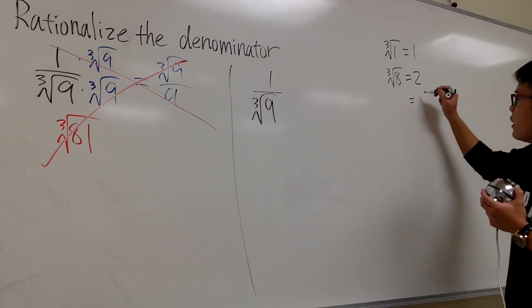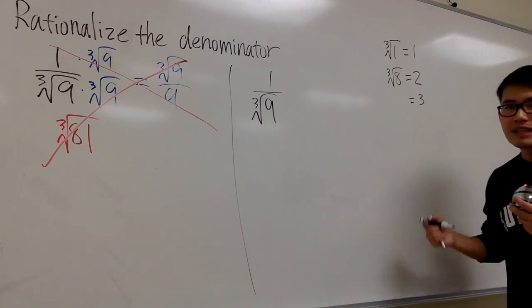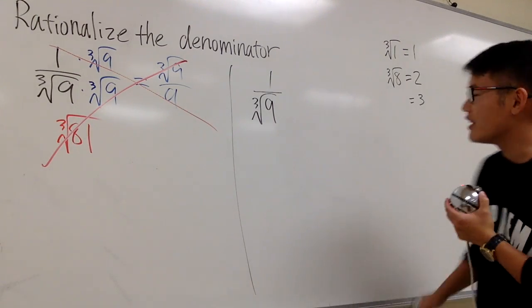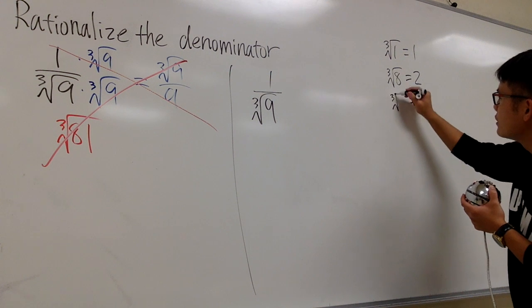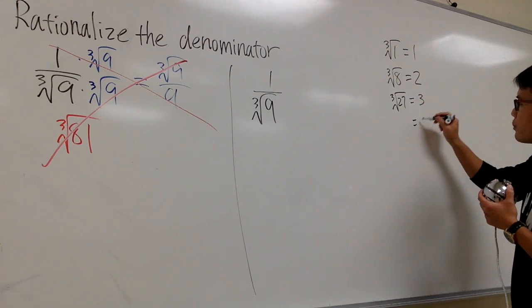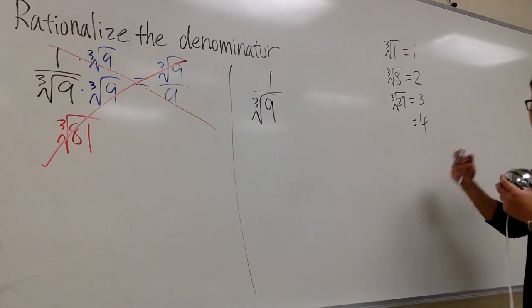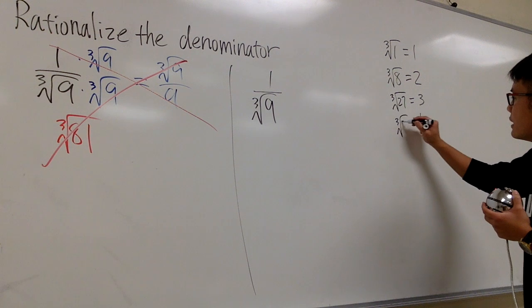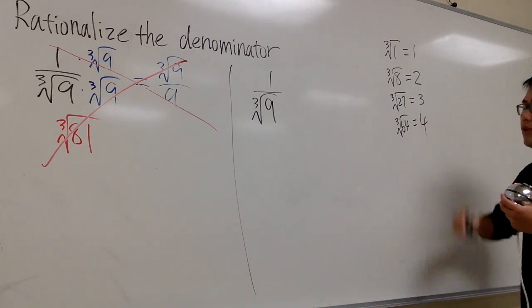The next one, I know I'm going to end up with 3. So I just have to do 3 times 3 times 3, and we know that's going to be 27. So that's how I can figure out the cube root of 27 is equal to 3. And just for practice, the next one is 4. 4 times 4 is 16, times 1 more is 64. So the cube root of 64 gives us 4.